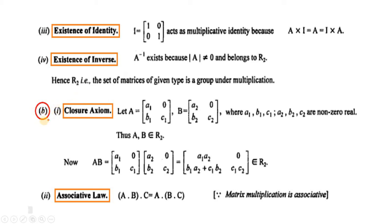Abhi hamare paas second part hai. This is the second part of the example. Toh closure check hum karte hai. This is the lower triangular matrix A and this is the lower triangular matrix B. All the elements A1, B1, C1 and similarly A2, B2, C2 are non-zero. The matrices A and B belong to R2. If we find the product A times B, we get a lower triangular matrix. So the product of two lower triangular matrices is also a lower triangular matrix, and it belongs to R2. R2 is closed under matrix multiplication.